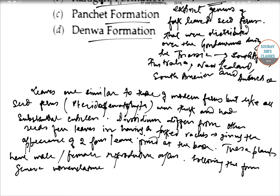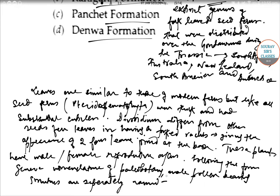Male pollen bearing structures are separately named Pteruchus, and the female structure is named Umkomasia.